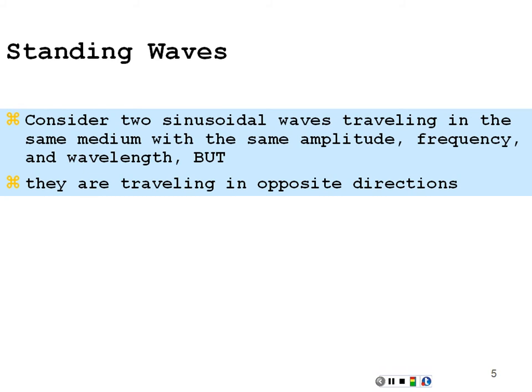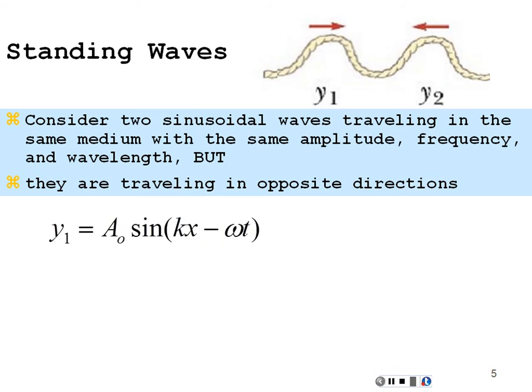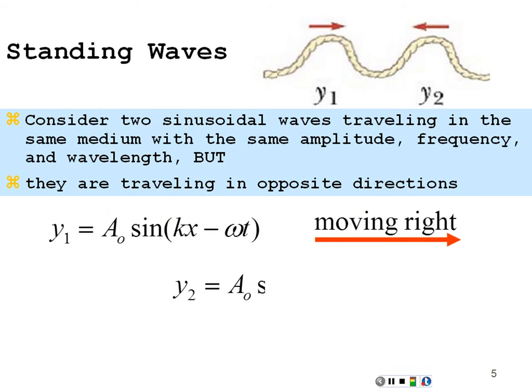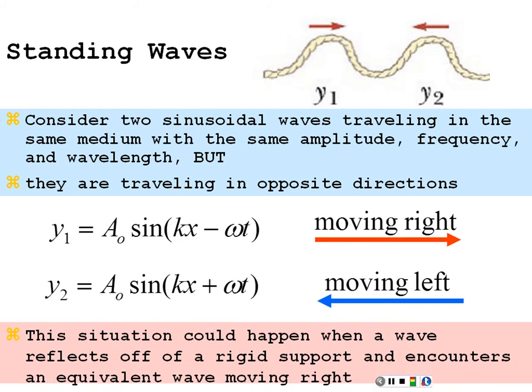Consider two sinusoidal waves traveling in the same medium with the same amplitude, frequency, wave number, and wavelength, but traveling in opposite directions. Wave Y1 equals A₀ sin(kx − ωt), moving to the right, and Y2 equals A₀ sin(kx + ωt), the same amplitude, wave number, and frequency, but moving to the left. This could happen if we had a rigid support and initiated wave after wave on the string, reflecting off the support so we have the same type of waves interfering in both directions.